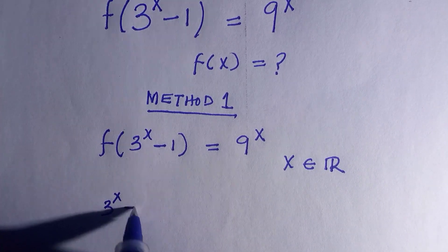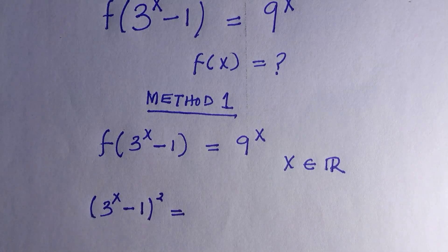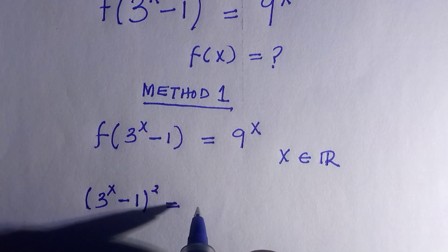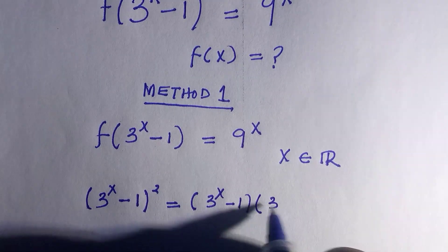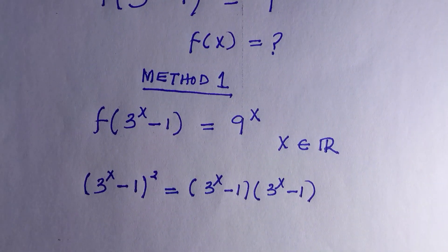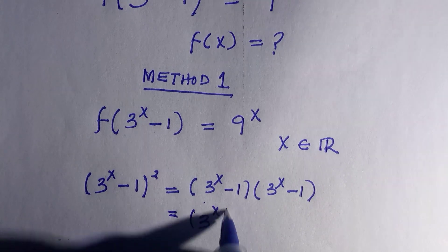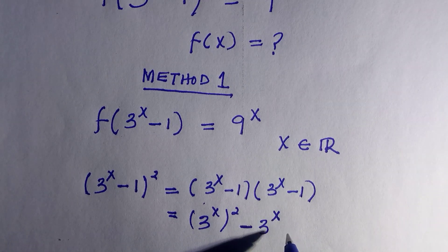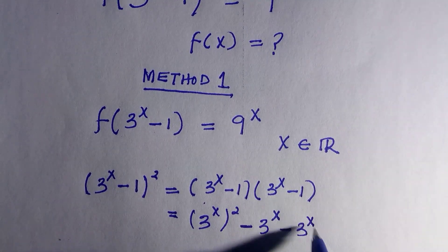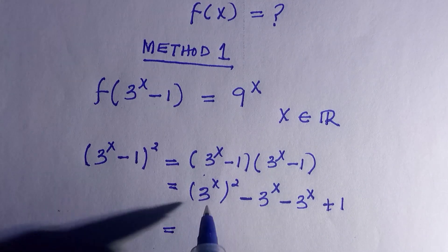If I take out 3 to the power of x minus 1 and square it, expanding this expression we have: 3 to the power of x minus 1, times 3 to the power of x minus 1. Opening the bracket: 3^x multiplied by 3^x gives 3^(2x), then minus 3^x, minus 3^x, plus 1.